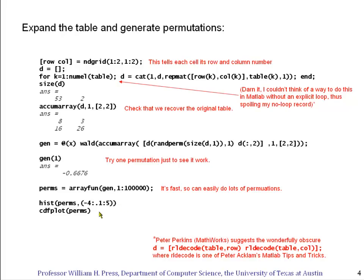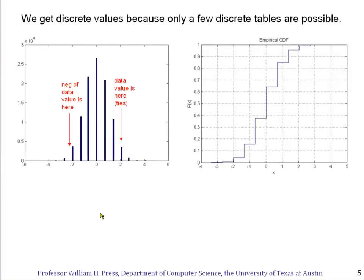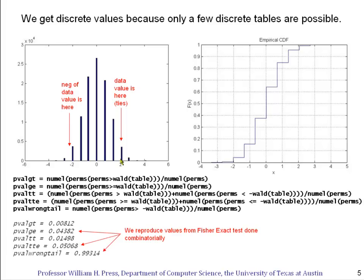Here we go. Let's do 100,000 of these permutations by using ArrayFun to apply the gen function onto the arguments here between 1 and 100,000. So that generates a long vector of Wald function values, and we'll plot its histogram and its cumulative distribution function. Here they are. Under the null hypothesis, this should be the distribution of the Wald function for our particular contingency table. And you'll recall that the value of the Wald function for the true data was 2.05 approximately. So it falls into this bin right here.